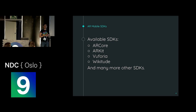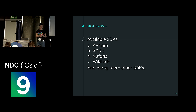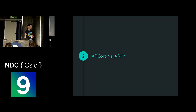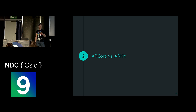Especially for Wikitude, the license can be a little bit costly — around $4,000. For Unity or if you just want to prototype, or put the app in the store, you really don't want to pay that much money just for testing. ARCore and ARKit are the most popular options, most of all because they are supported by Google and Apple, and second of all because they are free.